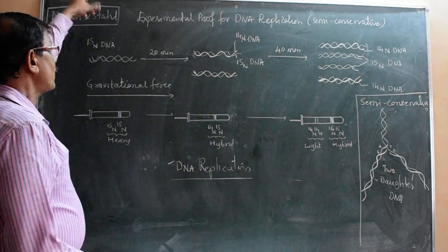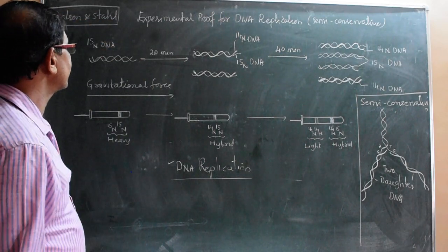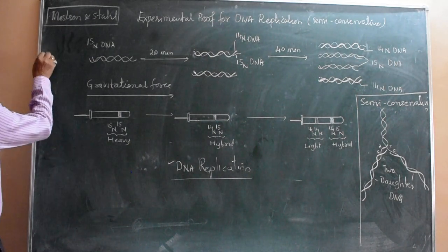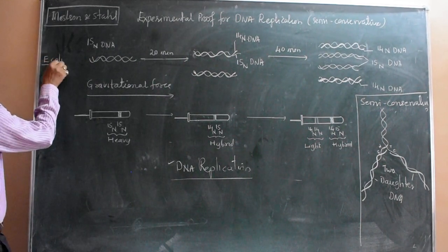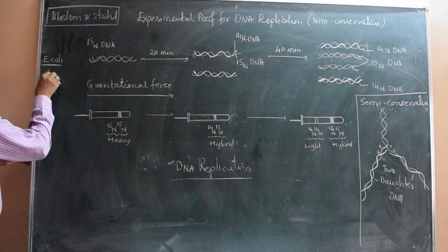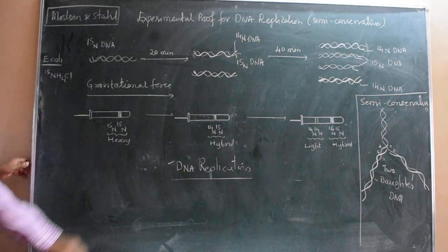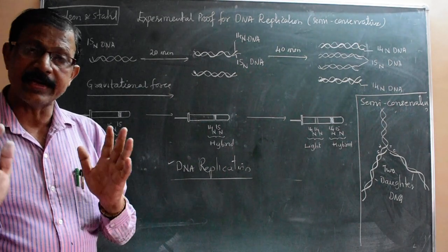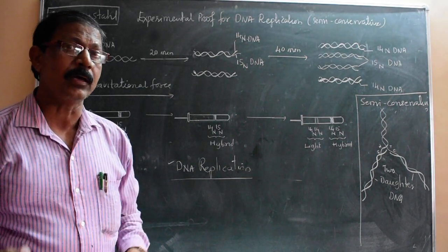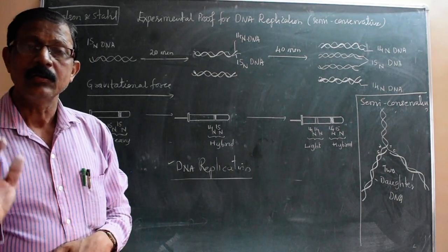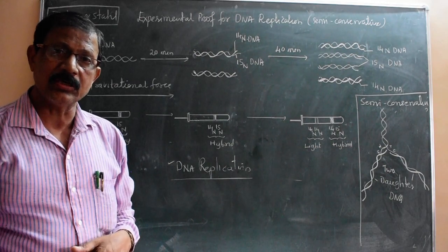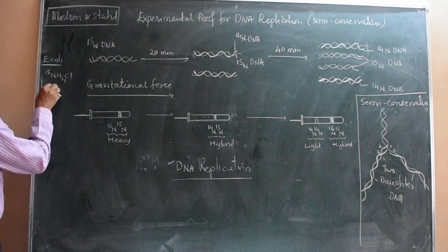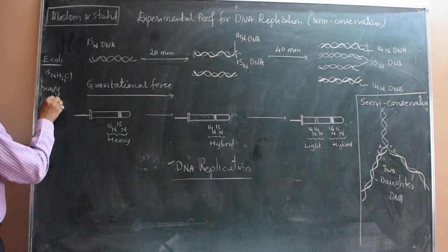In this experimental proof, first of all they grew E. coli bacteria in 15N-NH4Cl. 15N is a heavy isotope. This is the heavy nitrogen - remaining for many generations. Normal nitrogen is 14N, but this 15N is a heavy isotope. When E. coli is grown in 15N-NH4Cl - E. coli is a prokaryote containing naked DNA with no nuclear envelope.